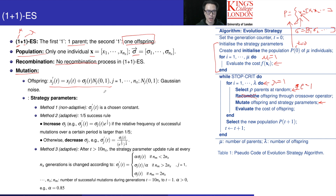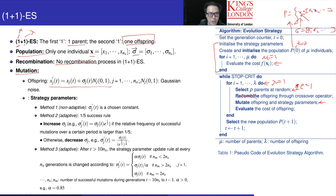We will use this mutation formula. This formula is very similar to the mutation process in the continuous genetic algorithm. Looking at this xj, where j goes from 1, 2, 3, 4, 5 up to nx — that is each element in the decision variable vector.